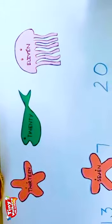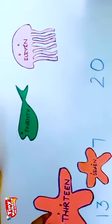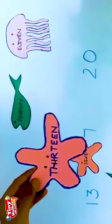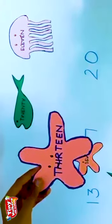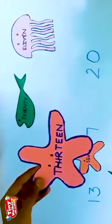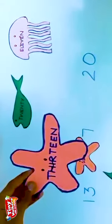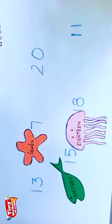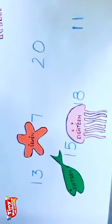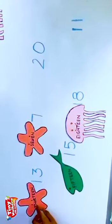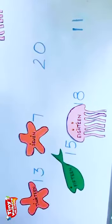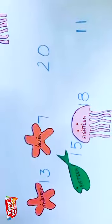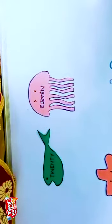Take another starfish. What is written on it? T-H-I-R-T-E-E-N. Thirteen. Now we will find thirteen here. One, three, thirteen is here? Yes. Now we will place the starfish near thirteen. T-H-I-R-T-E-E-N. Thirteen. Now let us take another sea animal.